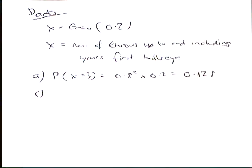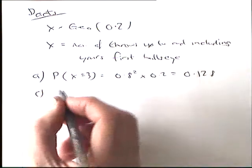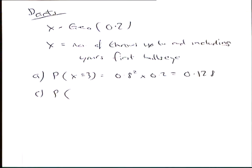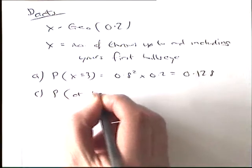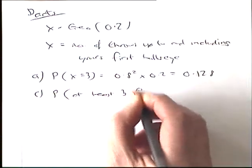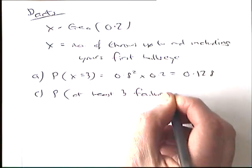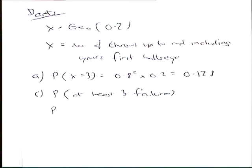Find the probability she will have at least three failures. What's that in notation? X is greater than or equal to 4 because it's three failures. It's greater than 3. At least. It's not including 3.